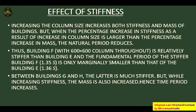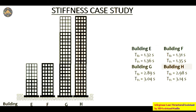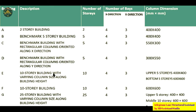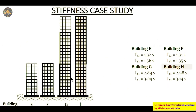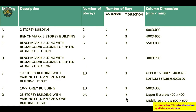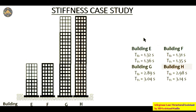Under buildings E, F, G, and H, the time period along X is 1.32. Building E has larger column sizes at the bottom and smaller at the top. Building F has all columns the same size — 600 by 600 mm. Building G is the 25-story building with varying column sizes, and building H has all columns the same size. In the stiffness case study, building E has a somewhat higher time period and building F has a somewhat lower time period.